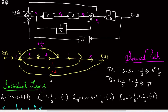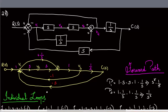L2 uses the shortcut path: 1 · (1/S) · 1 coming back with negative 1, giving 1 · (1/S) · 1 · (−1). The next loop (L3) is the big loop: 1 · S · S · 1 · (1/S) coming back with negative S. And L4 is: 1 · (1/S) · 1 · (1/S) coming back with negative S.